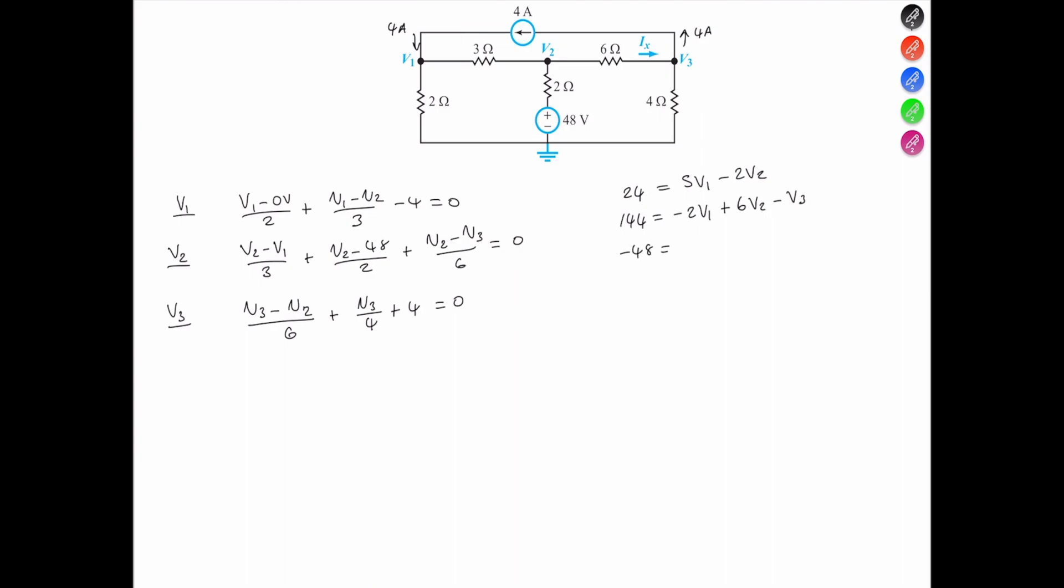And we have negative 48 volts equals, let's call this 0, 0, and then say negative 2 V2 plus 5 V3.